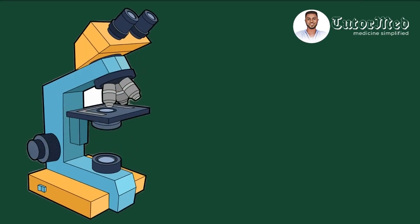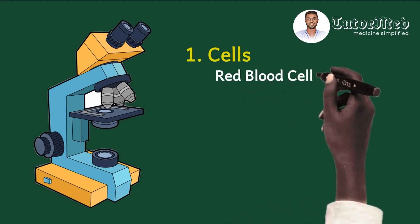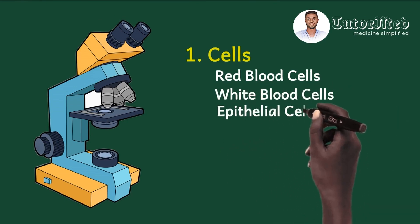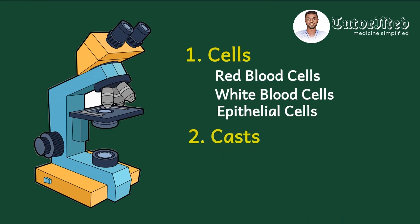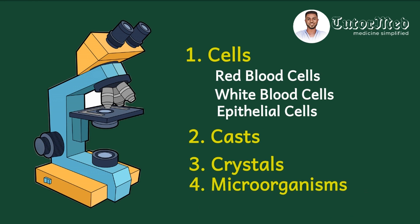For urine microscopy we look for three C's and one M. The first C is the cells in the urine sediment — specifically red blood cells, white blood cells, and epithelial cells. The second C is casts. The third C is crystals in the urine sediment. And the M is microorganisms, like bacteria and parasites.